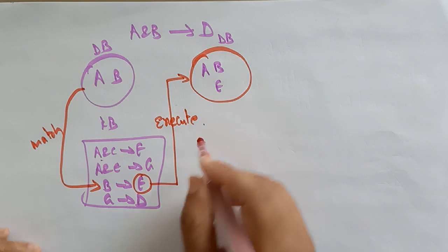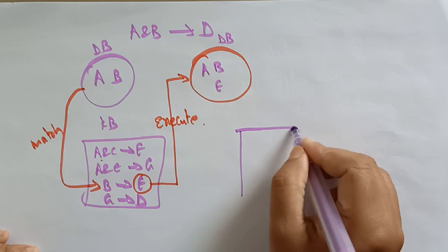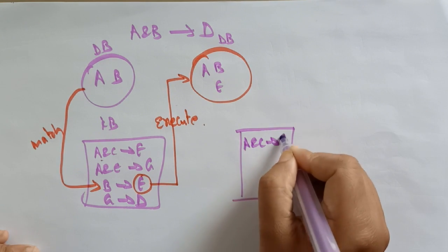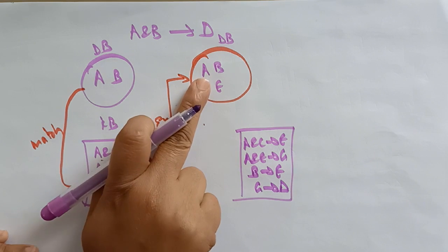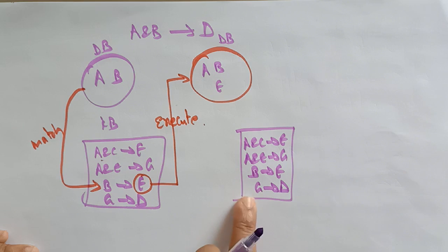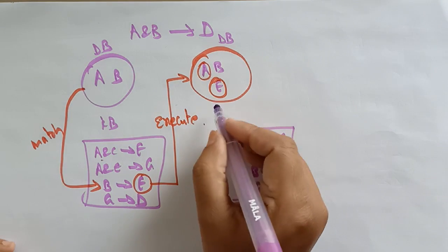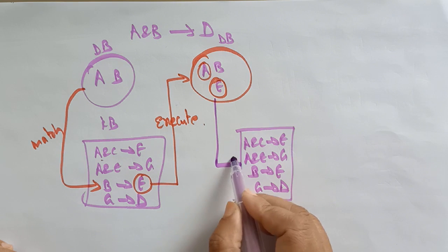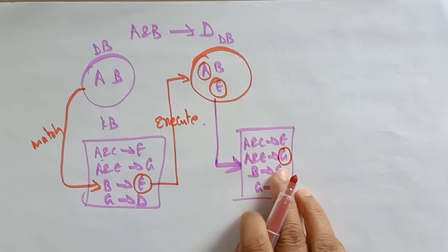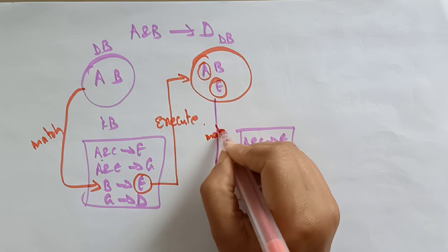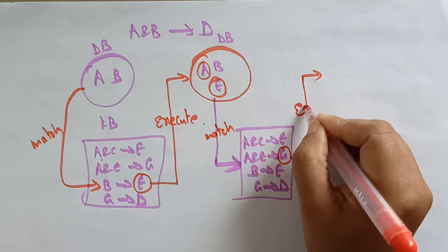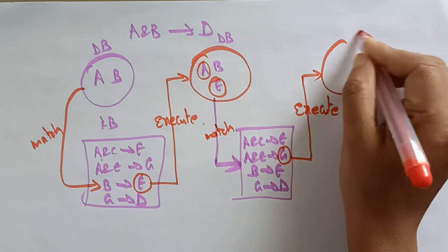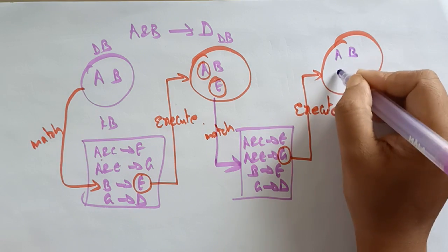Now check the knowledge base again: A and C implies E; A and E implies G; B implies E; G implies D. A and B is not there; single E is not matching. But A and E combination is there in the database, and A and E implies G is in the knowledge base. So execute G into the database. Now the database contains A, B, E, and G.